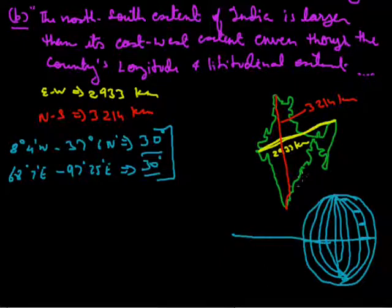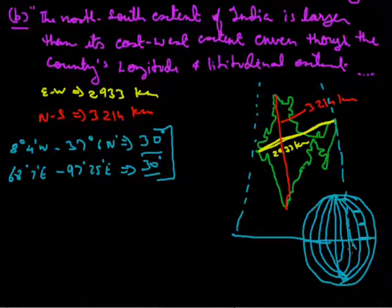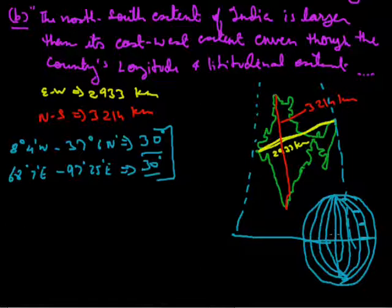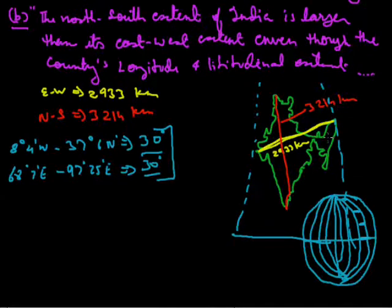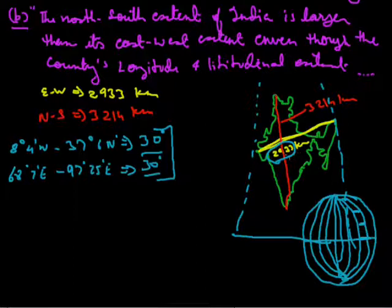The equator is somewhere here and India is above it. At the level of India, the longitudinal lines are closer together. That is why even though the extent is 30 degrees, the actual east-west distance is only 2,933 kilometres.